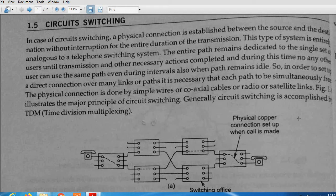In circuit switching, there is a physical connection between the source and the destination. This type of switching system is mainly used for telephone switching systems.